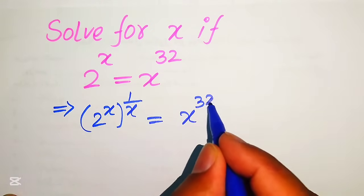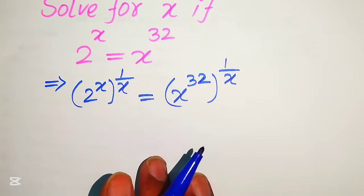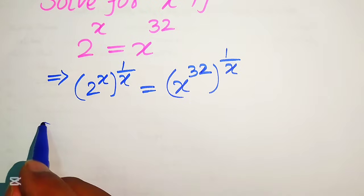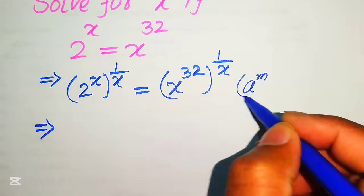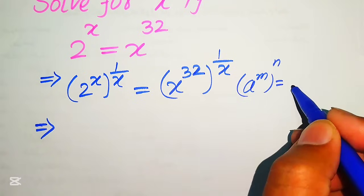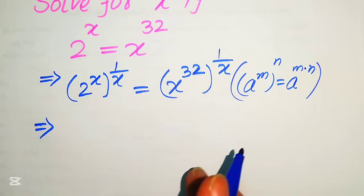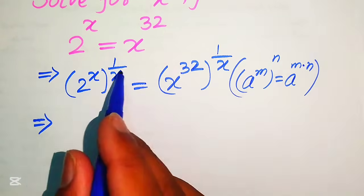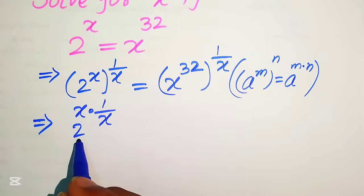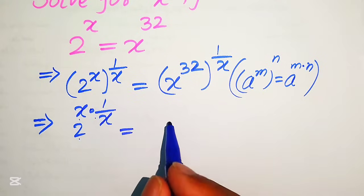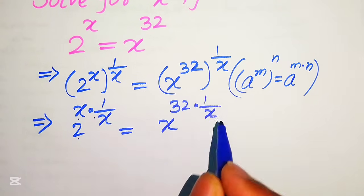So it will be written as x to the power of 32, and its whole power is 1 over x. In the next step we apply the exponent law: a to the power of m to the power of n equals a to the power of m multiplied by n. According to this law, we multiply the two exponents: x to the power of 2 to the power of x multiplied by 1 over x, and x to the power of 32 multiplied by 1 over x.